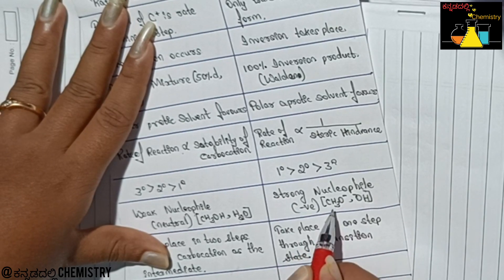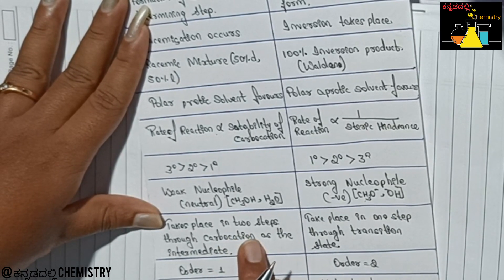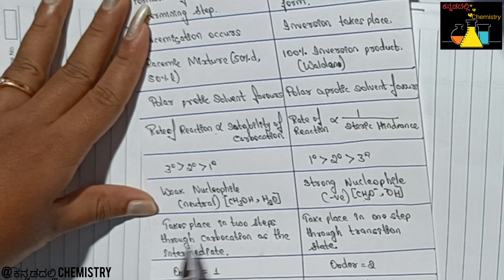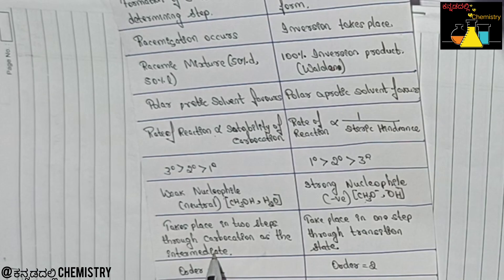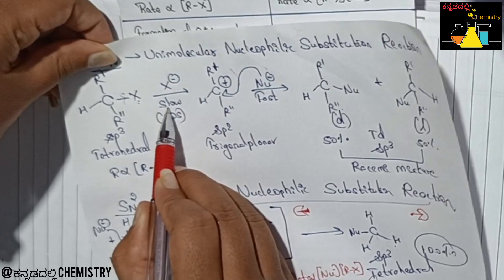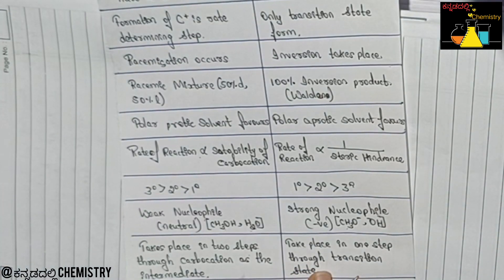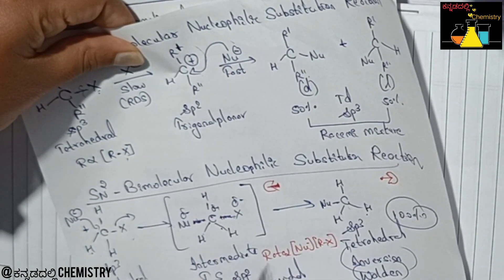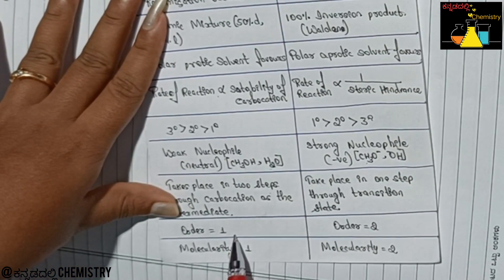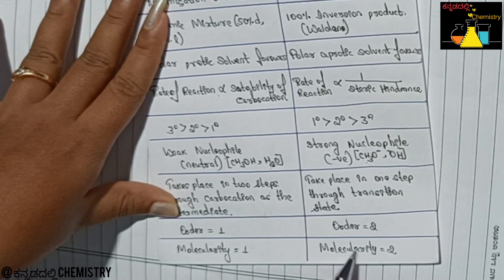For SN2, nucleophiles considered include OH⁻ and CH₃O⁻. SN1 reaction takes place in two steps through a carbocation as the intermediate — slow step then fast step. SN2 takes place in one step through a transition state only. Order for SN1 is 1; order for SN2 is 2. Molecularity for SN1 is 1; molecularity for SN2 is 2.